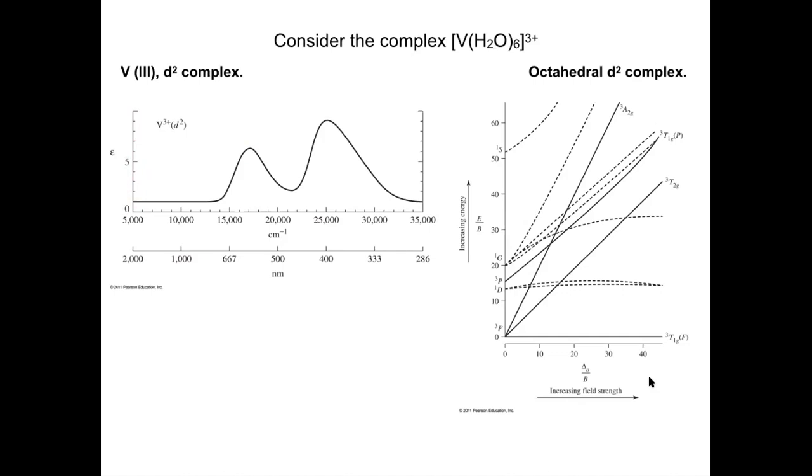I've also pulled the Tanabe-Sugano diagram for a D2 metal complex. D2 because this is vanadium 3 plus, so there's two D electrons. We can utilize this diagram to answer a lot of questions about these transitions.